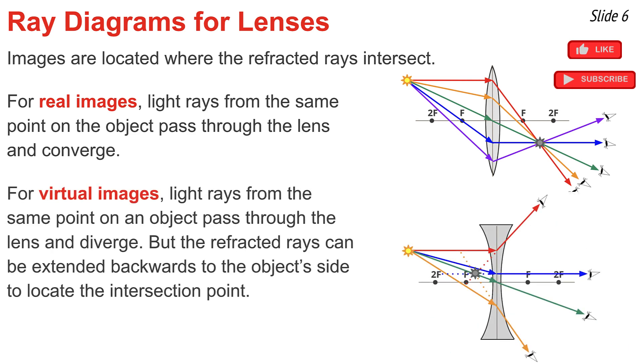For virtual images, light rays from the same point on the image will pass through the lens, but instead of coming together, they will separate or diverge from one another. But the refracted rays can be extended backwards to the object side of the lens to locate an intersection point or an image location. Ray diagrams are based on this understanding that images are located where the refracted rays intersect.